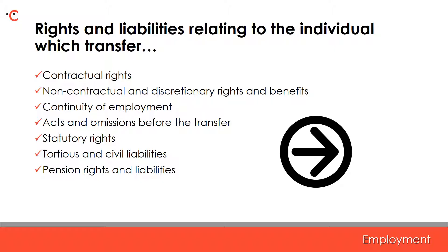What about statutory rights? Whilst there are limited exceptions, as a general rule, statutory rights and liabilities can pass to the transferee. This will include claims relating to equal pay, discrimination, wrongful and unfair dismissal, redundancy, working time and rights for part-time and fixed-term workers. Tortious and civil liabilities will also pass to the transferee as a general rule. This will include personal injury claims.